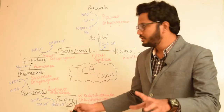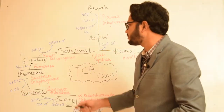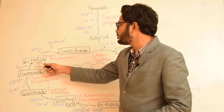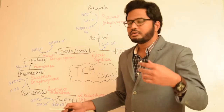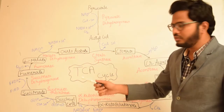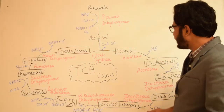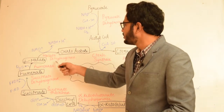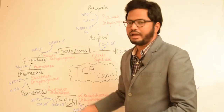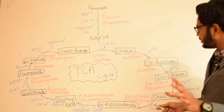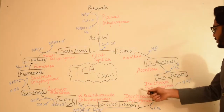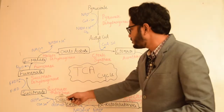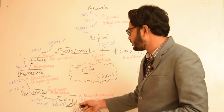The succinate formed is acted upon by succinate dehydrogenase, leading to formation of fumarate, and in this process one FADH₂ is synthesized. Fumarate releases water in the presence of fumarase, leading to formation of malate. Malate in the presence of malate dehydrogenase leads to formation of oxaloacetate, which is regenerated — completing the continuous cycle. At this last step there is again formation of NADH.